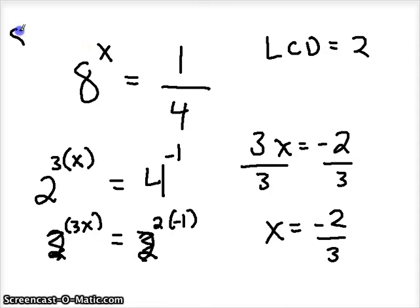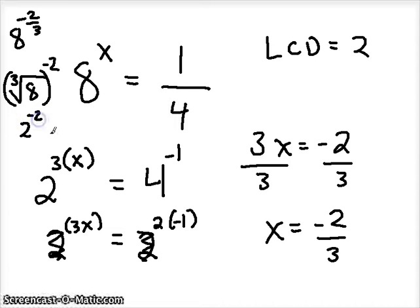Let's check it. 8 to the negative 2/3. That means the cube root of 8 to the negative 2 power. Well the cube root of 8 is 2, and 2 to the negative 2 takes us over to 1/4. So our missing exponent was negative 2/3.